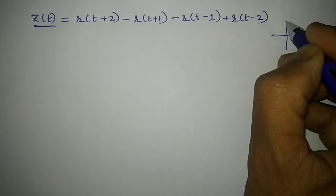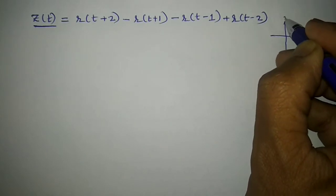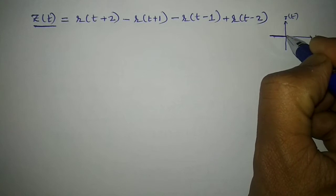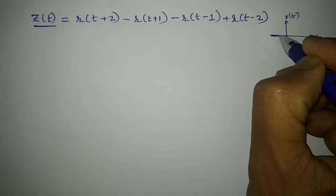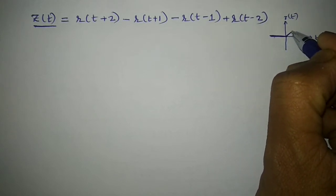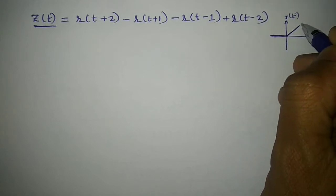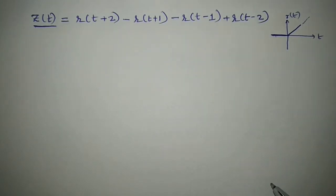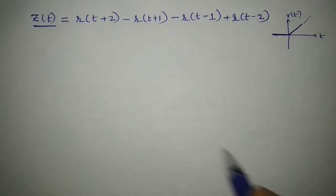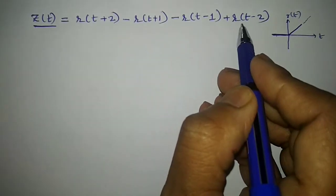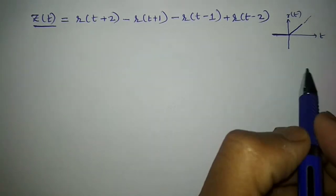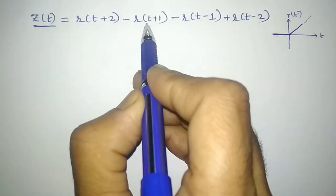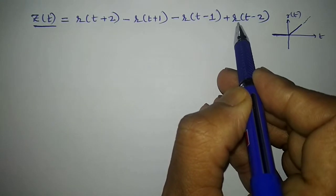R is a ramp signal. It is 0 everywhere from minus infinity to 0, and from 0 onwards it increases linearly. So these are all nothing but the shifted versions of R. First I need to sketch signals 1, 2, 3, 4.